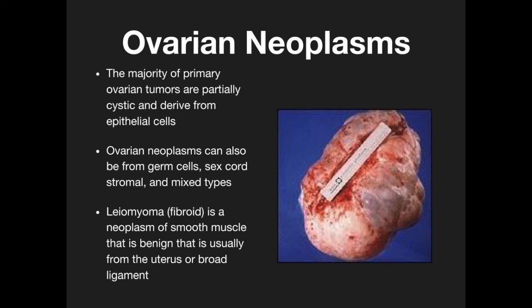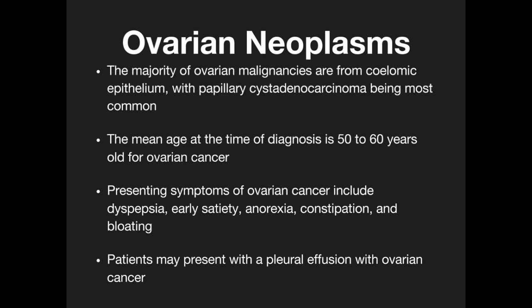Leiomyoma, or fibroid, is a neoplasm of smooth muscle that is benign, usually from the uterus or broad ligament. The thing to remember about fibroids is they're estrogen-dependent tumors. Usually when the patient goes into menopause, they shrink because it's estrogen-dependent tissue.